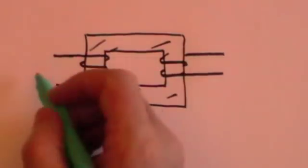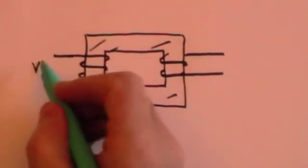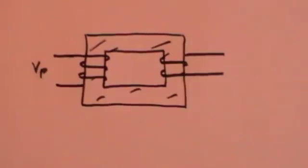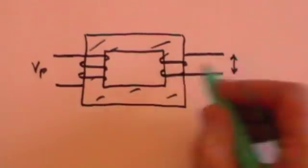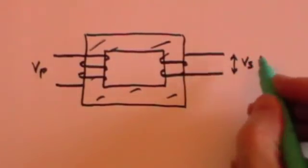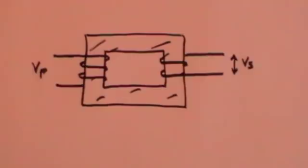You have a voltage here, which is called the voltage of the primary. The key thing about this is it must be an alternating current voltage — AC. DC won't work, for reasons I'll explain in a moment. And you get out of this side the voltage of the secondary, and that's what you want — either stepped up or stepped down, depending on whatever you need.